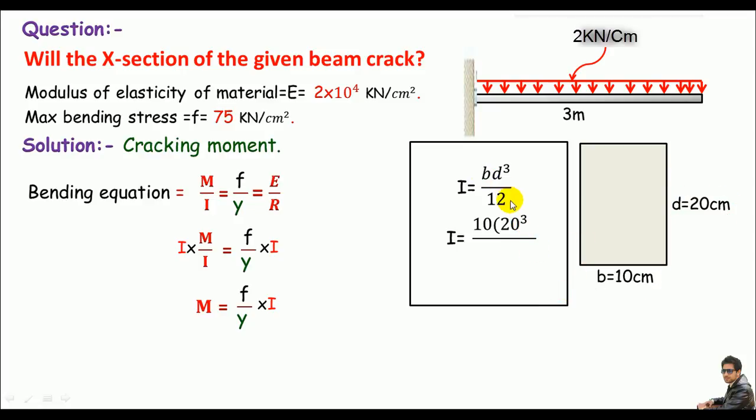So 20³ divided by 12, we can get 6666.67 cm⁴. The 4 is the power because the moment of inertia is the second moment of the area.